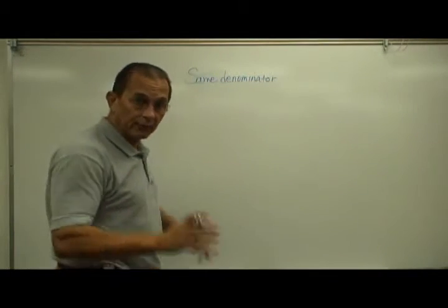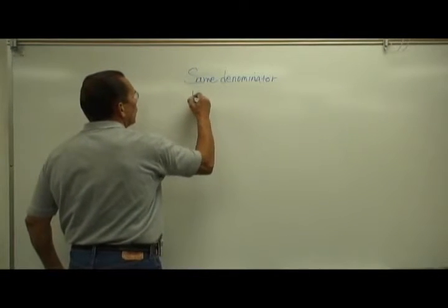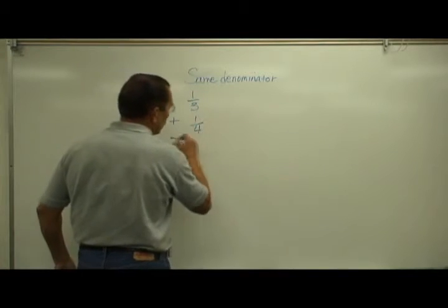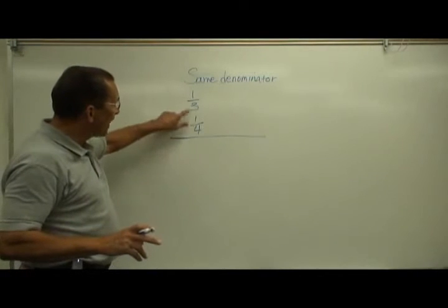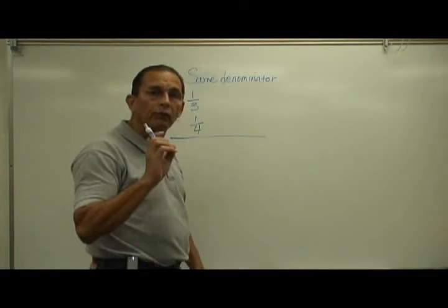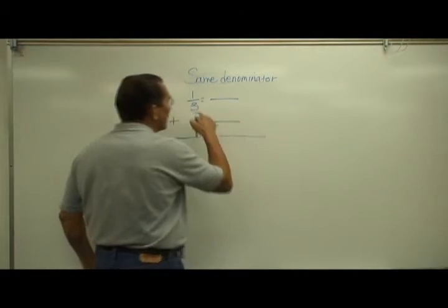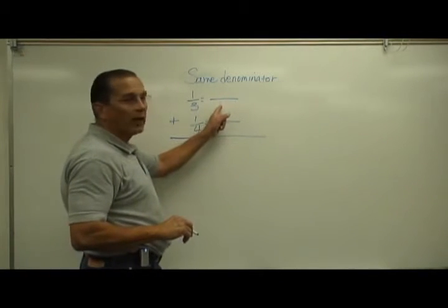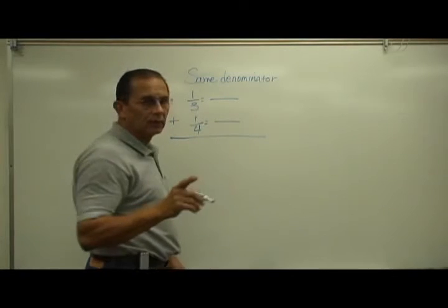So let's look at a fraction and then we're going to do the actual fraction problem. We're going to add one-third plus one-fourth. Now we have a problem — the denominators are different. So what we're going to do is create equivalent fractions; that is, fractions with the same value as our original fractions, except that these fractions are going to have the same denominator. Equivalent fractions with the same denominator.